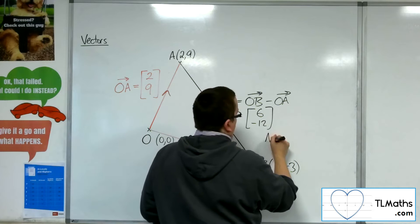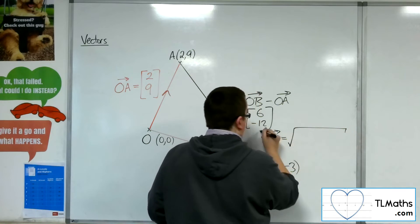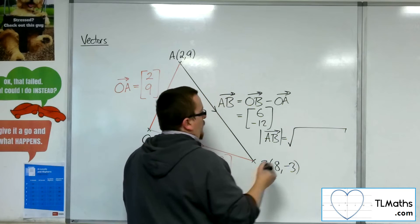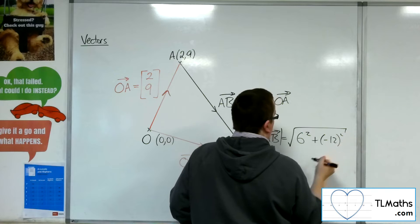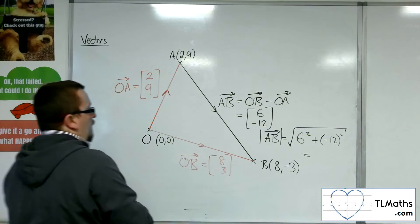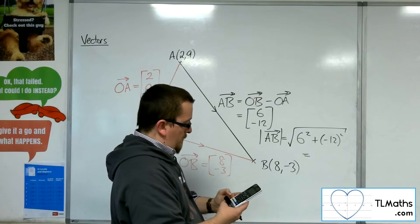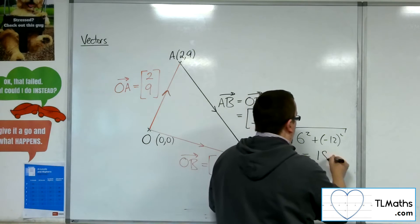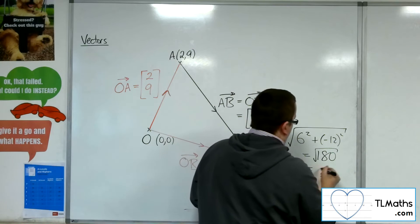So the length of AB is equal to 6 squared plus minus 12 squared, square rooted. So 36 plus 144 is 180 square rooted. So square root of that is 6 root 5.